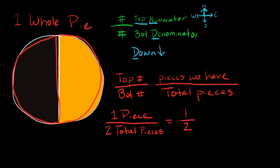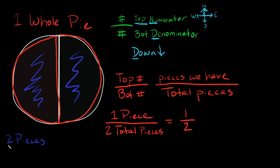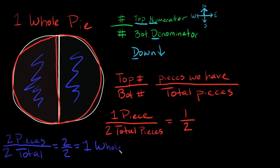What if I ate both pieces of the pie? I ate two pieces. How many total pieces are there? Two. So that's two over two. Two divided by two is just one — which makes sense, because I ate one whole pie. There were two pieces and I ate two pieces, so that's one whole pie.